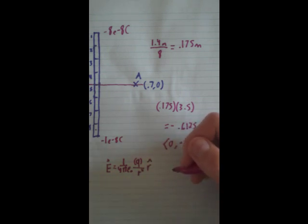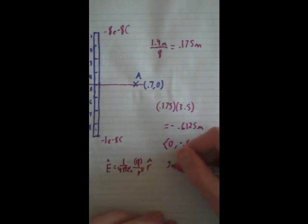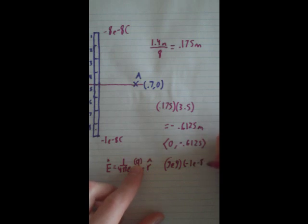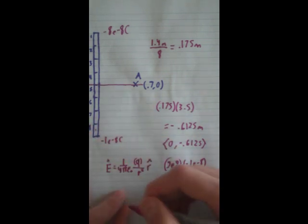E equals one over four pi epsilon naught times charge over distance squared times r hat. Okay, well, let's do the easy ones first, so we know that this is going to be 9 e 9, because that's what the constant always is. We know Q is going to be negative 1 e to negative 8.